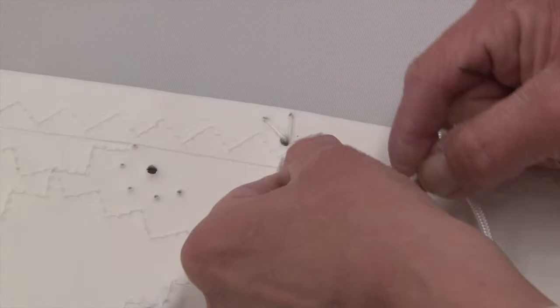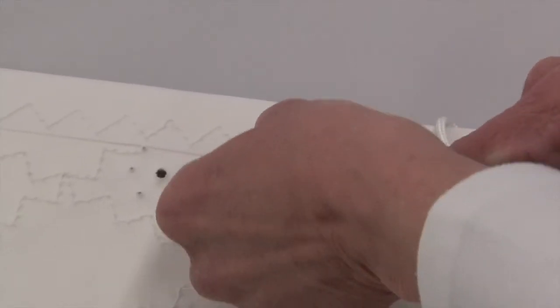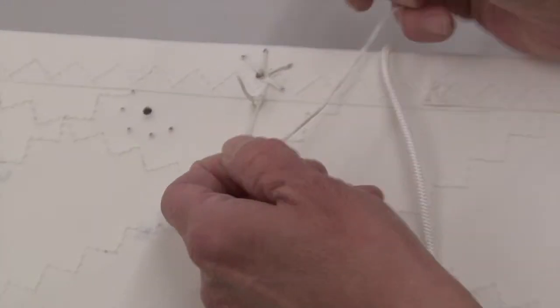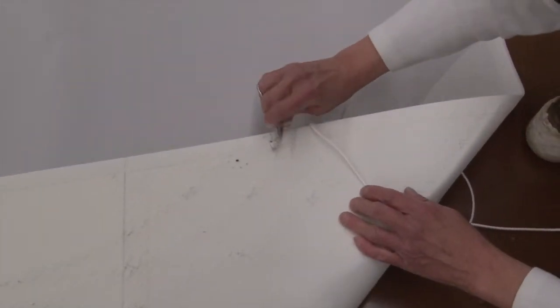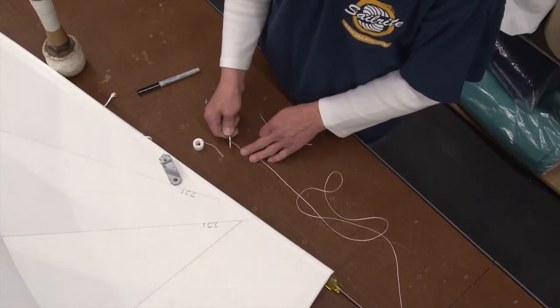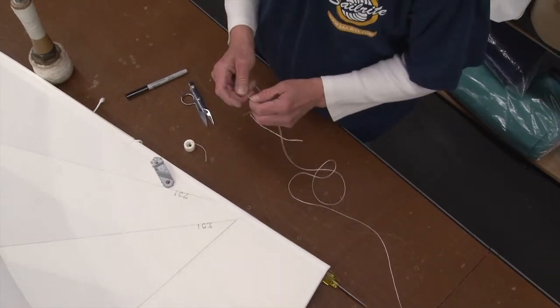Then we'll take our hot knife and melt these knots off. That keeps it nice and tight. Cut that off. Waxed twine. We need another length of the waxed twine.